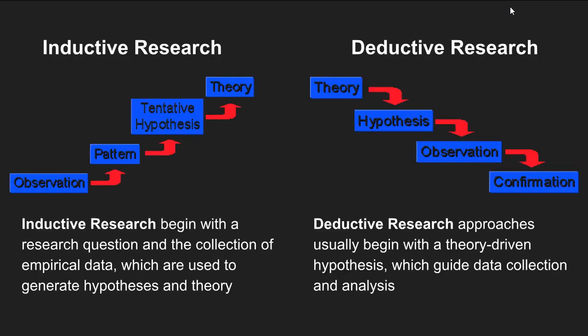Inductive research begins with the research question and the collection of empirical data. Based on the generalizations made from those empirical data — the patterns that emerge — you begin to make tentative hypotheses, which you reconfirm with additional analysis. Eventually you produce a set of interrelated ideas that advance your causal understanding of the social process and contribute to a theory, starting from empirical observations.